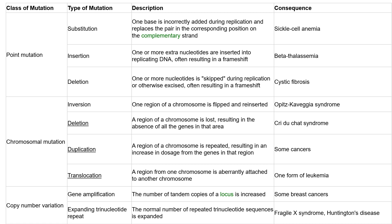Let's have a look at the different types of mutations. There are three classes: point mutations, chromosomal mutations, and copy number variation. Looking firstly at point mutations, you have substitution, insertion, deletion, and inversion. In a substitution, one base is incorrectly added during replication and replaces the original base at the corresponding position — for example, the sickle cell anemia case where GAG became GTG.